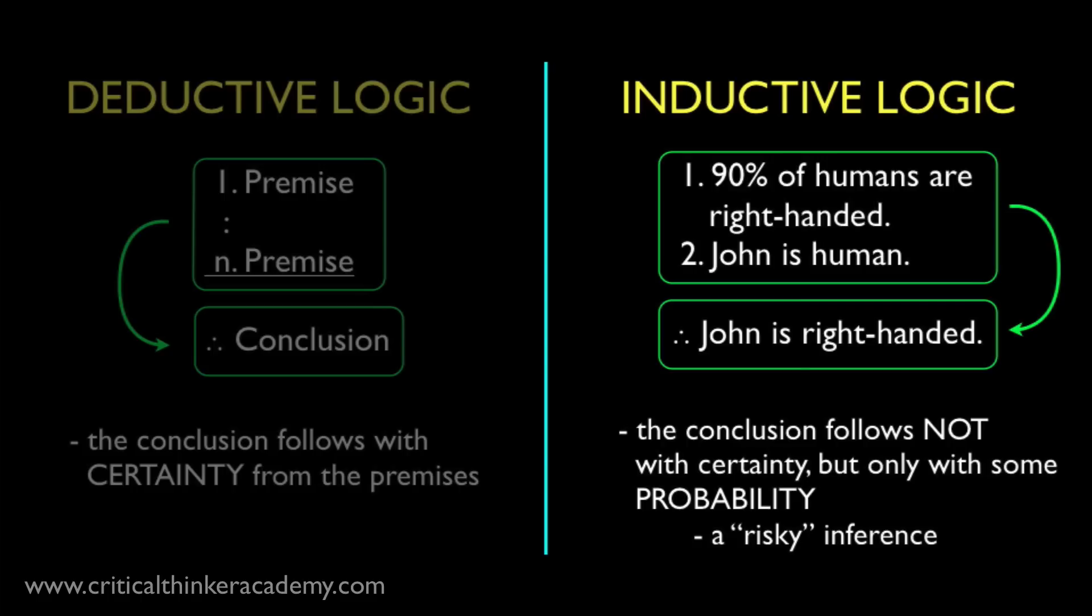In this case, it's highly likely that John is right-handed. So we'd say that, while the inference isn't logically valid, it is a logically strong inference.